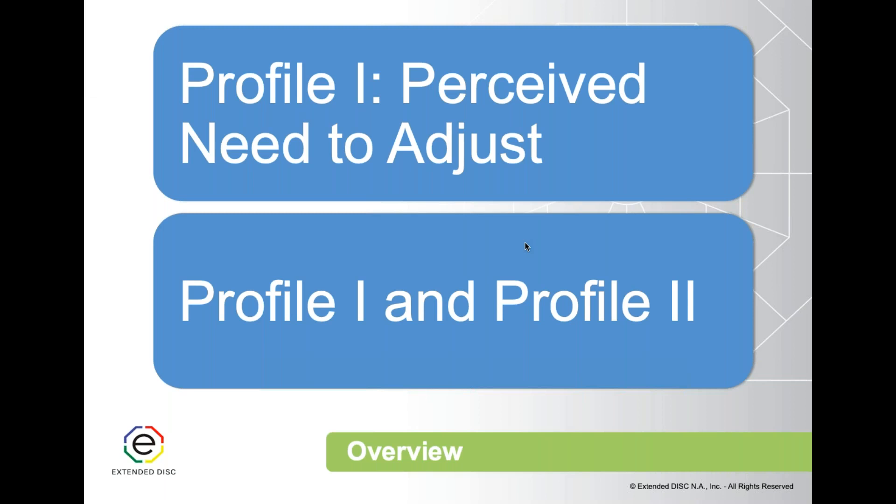The best way for most people to relate to Profile 1 is to think about a first date or a job interview. In those situations you're very conscious about how you're behaving and really trying to put your best foot forward — that's what Profile 1 is. Profile 1 is the first date; Profile 2 is your spouse 20 years later. That's who you wake up next to — that's who that person truly is.